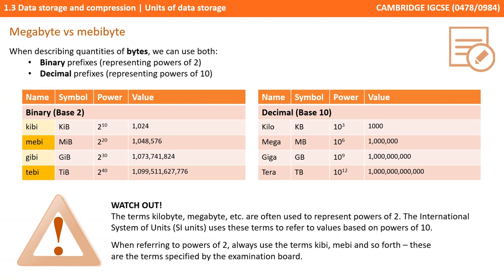Up until now, we've actually been using the terms kilobyte, megabyte, and gigabyte inaccurately — and this was on purpose, because many textbooks, the industry, and casual conversation use these terms incorrectly in everyday use. When describing quantities of bytes, we can use both a binary prefix representing powers of 2 and a decimal prefix representing powers of 10. Historically, the terms kilobyte, megabyte, etc. have been used to represent computing data capacities of powers of 2. But the International System of Units also uses kilo and mega to refer to powers of 10. So when referring to powers of 2, the correct terms we should be using are kibibyte, mebibyte, and so forth, as shown in the table on the left — and these are the terms mentioned in your specification.